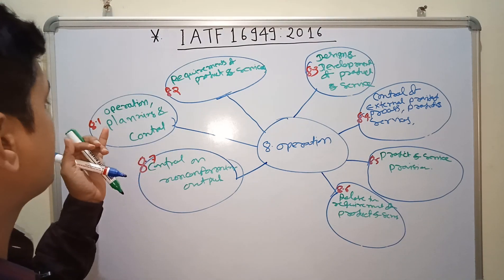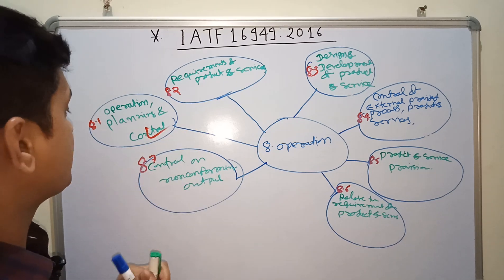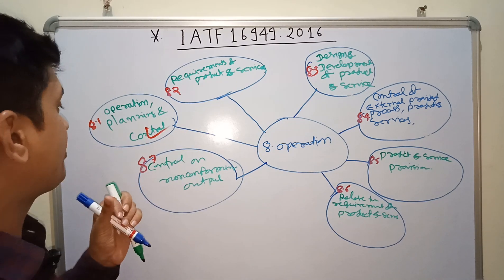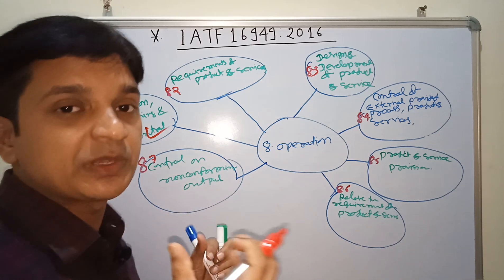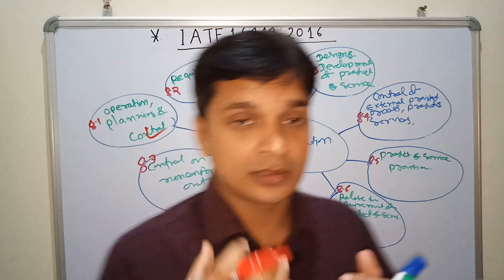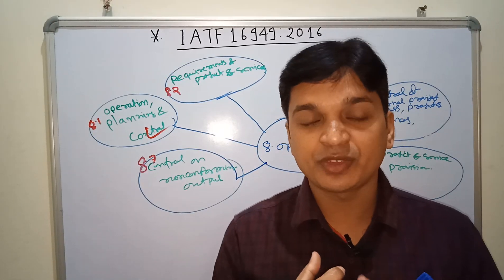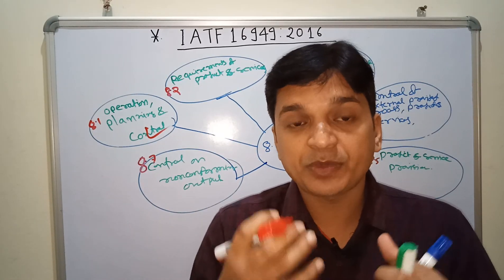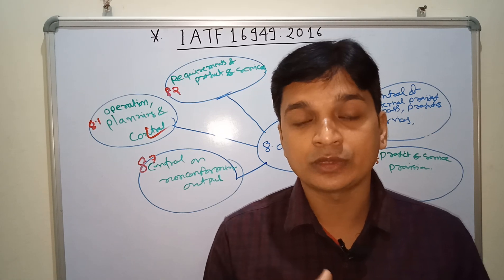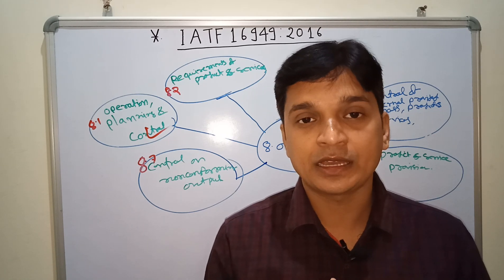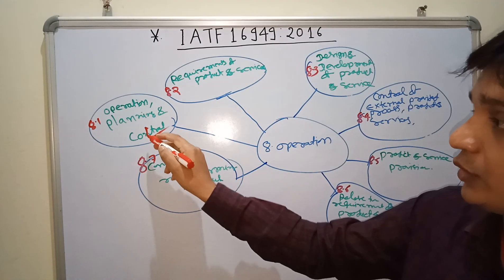Sub-clause 8.1 is Operation Planning and Control. This clause includes the requirement of customer-specific requirements, product design, technical specification, acceptance criteria, and logistic requirements. The acceptance criteria is the most important aspect of this clause.